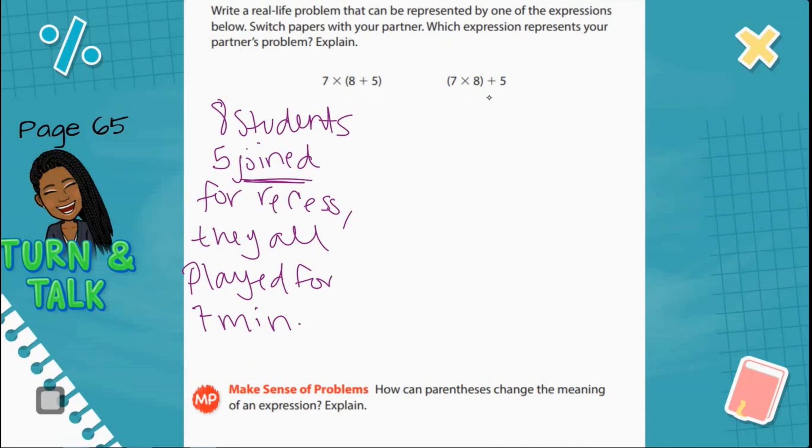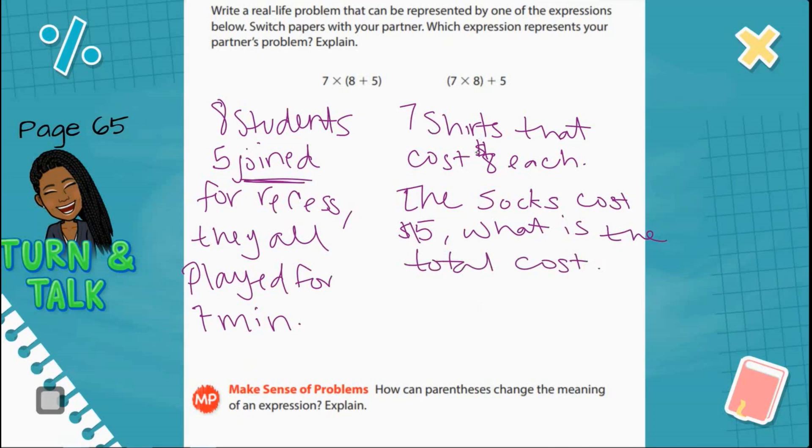Let's look here. If I have 7 times 8 plus 5, I could say there were 7 shirts that cost $8 each. The socks I bought cost $5. And then I would need to know my total. What is the total cost? That would be some real life scenarios. Because if I have 7 shirts that each cost $8, I would have to multiply 7 times 8. And then I also bought some socks that cost $5. So I would need to add the 5 to my cost of my shirts.